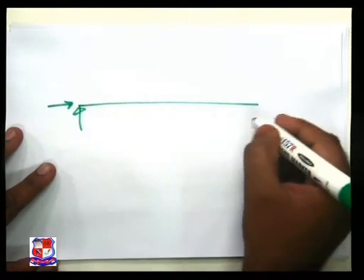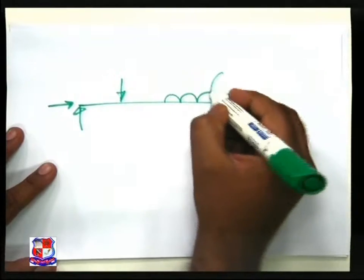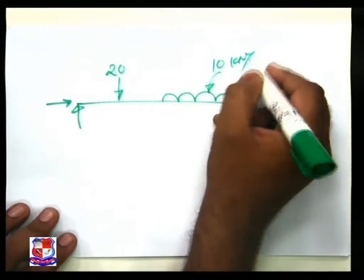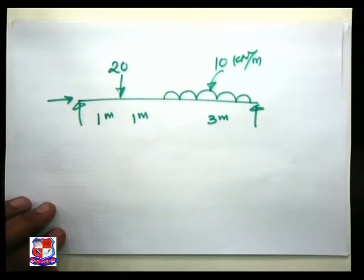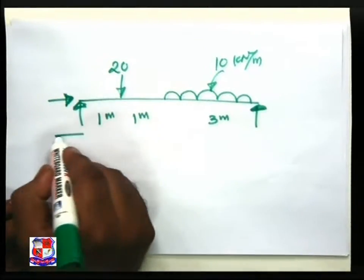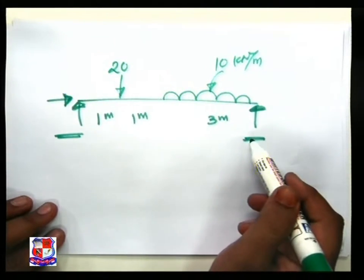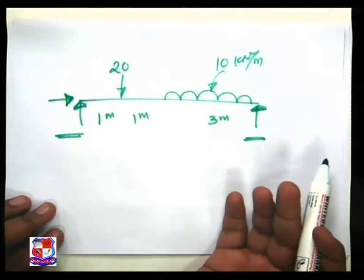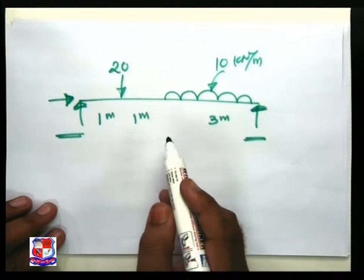This is the given simply supported beam. The given loads are 20 kilo newton and 10 kilo newton per meter. The lengths are one meter, one meter, and three meters. The arrow directions shown are the assumed positive directions based on our sign convention. If an answer comes out negative, it means the assumed direction is wrong — you can assume the opposite direction.